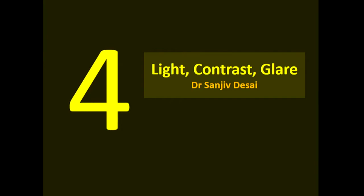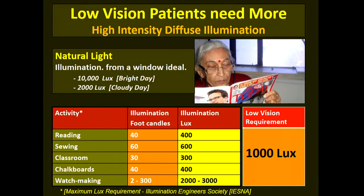Before we go on to clinical dispensing, let me tell you a little bit about light, glare, and contrast, and how to modify them to help the low vision patient. For reading, one requires 400 lux of illumination, and for sewing, about 600 lux.